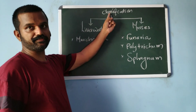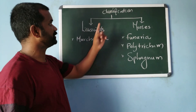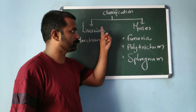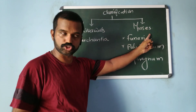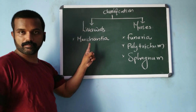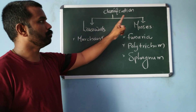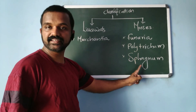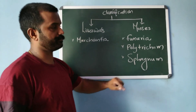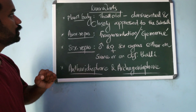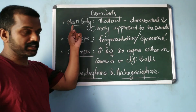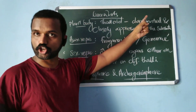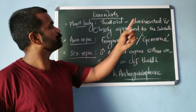Next, about the classification of bryophytes: bryophytes are classified into two groups — liverworts and mosses. Example of liverworts: Marchantia. Examples of mosses: Funaria, Polytrichium, and Sphagnum. In liverworts, the plant body is thalloid; the thallus is dorsiventral and closely appressed to the substrate.